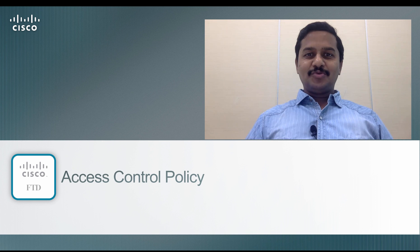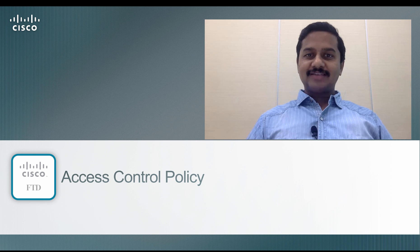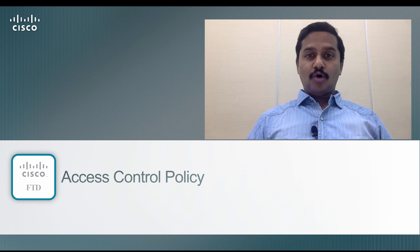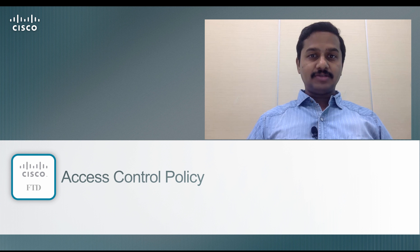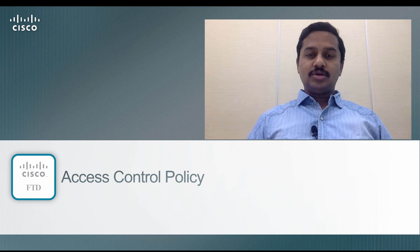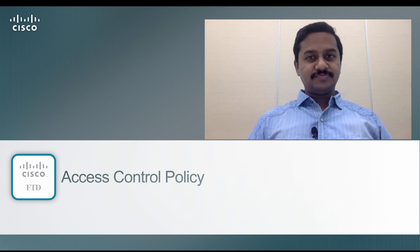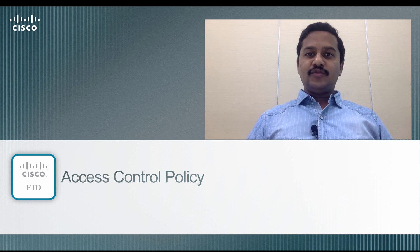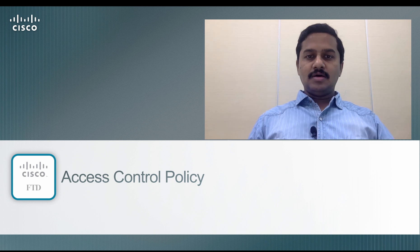Hello, welcome to the Firepower Threat Defense training video series. I'm Nanda. In this video we are going to look at the access control policy. The access control policy is the prime pillar of Firepower. When you deploy it either as a next-gen IPS or next-gen firewall, you need to have an access control policy on the device which inspects the traffic and takes policy decisions based on your configuration.